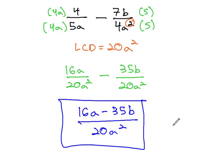When adding and subtracting with different denominators, we identify the LCD and build up each fraction to have matching denominators. Reduce at the end if we can.